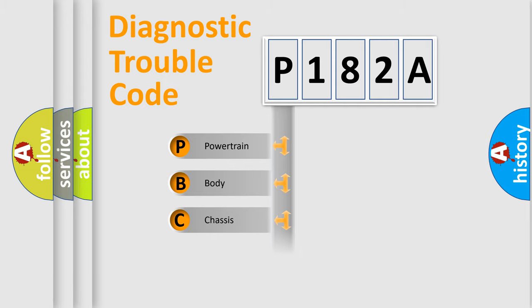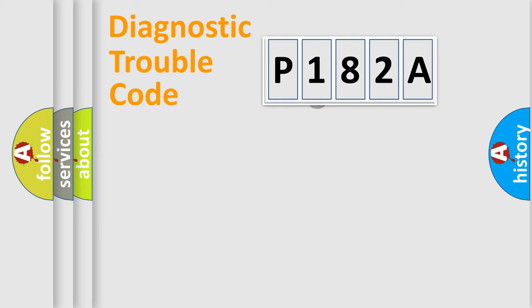Powertrain, body, chassis, network. This distribution is defined in the first character code.